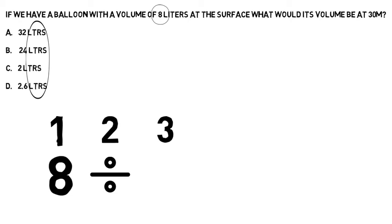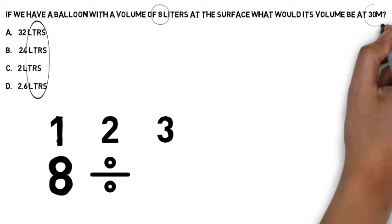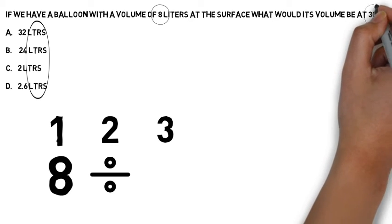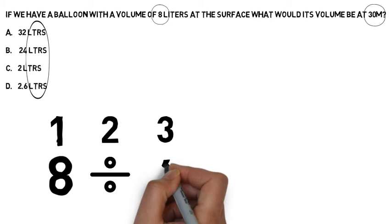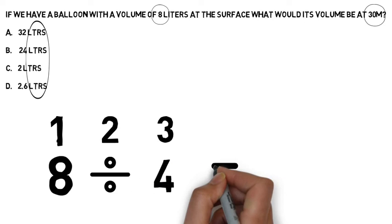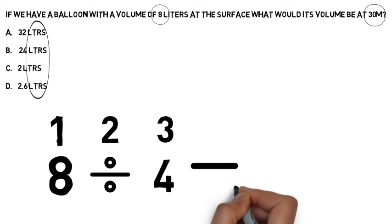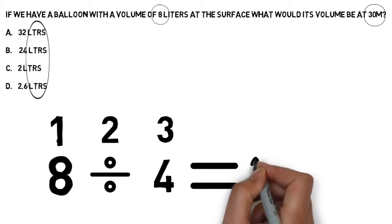Now we can look at the depth in the question: 30 metres. Using the depth-pressure chart explained in video one, we can fill in the number 4 — 4 atmospheres at 30 metres. We now have our calculation.